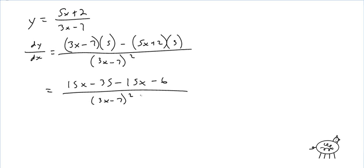If you try to put it in a certain form and get it wrong, they'll take a point off. They'll look back at your work and say, 'You got all the right work but it's in a different form with a wrong answer.' So just be really careful. Anyway, the 15x's cancel and we get −41 over (3x − 7)² — that's dy/dx.